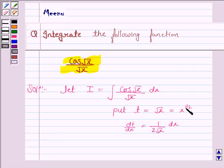So the derivative is 1/2 into x to the power 1/2 minus 1, which is x to the power minus 1/2. So this is equal to 1/(2√x).